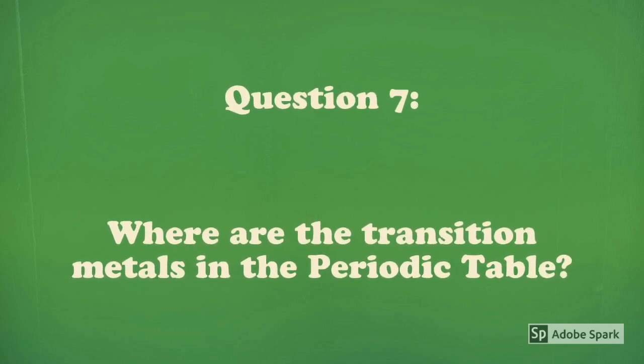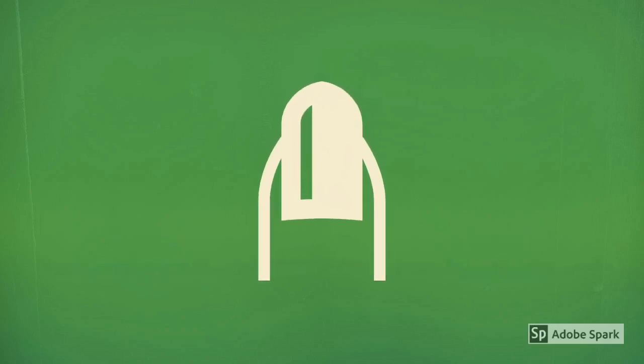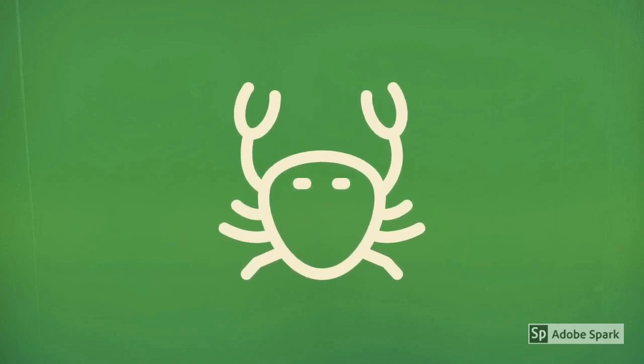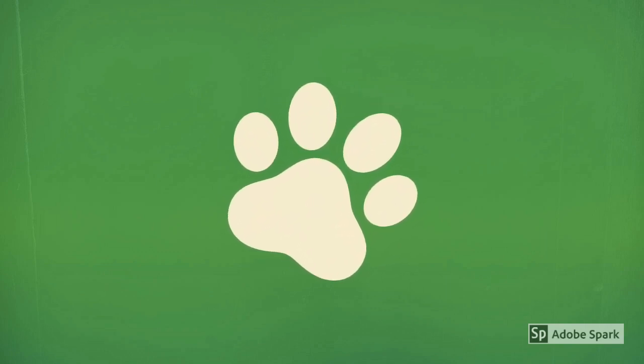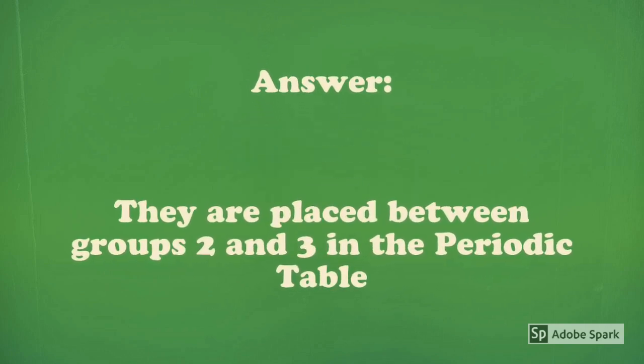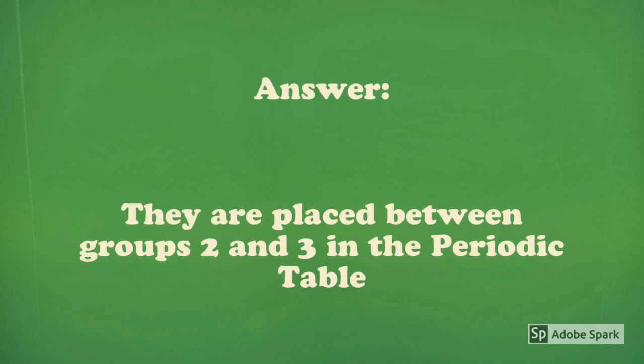Question 7: Where are the transition metals in the Periodic Table? Answer: The transition metals are placed between Groups 2 and 3 in the Periodic Table.